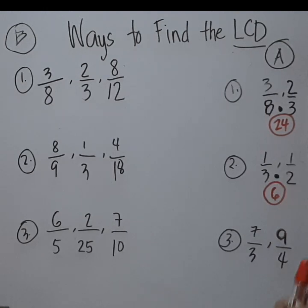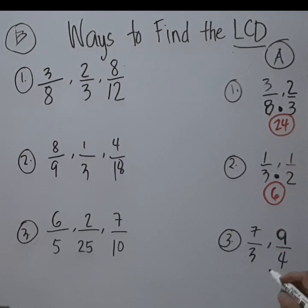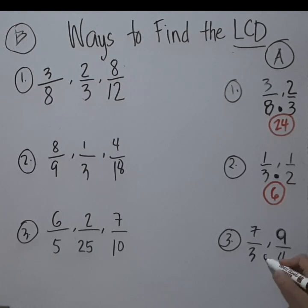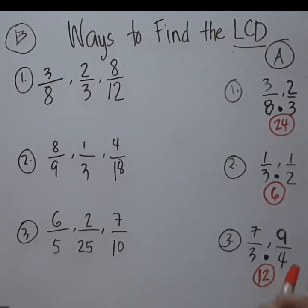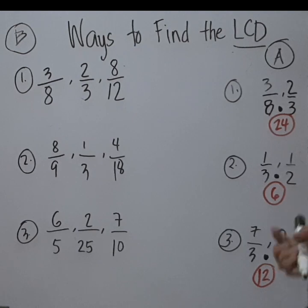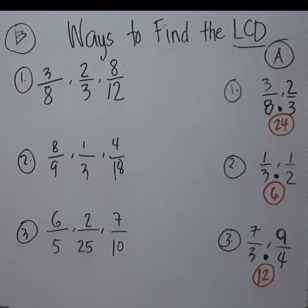Now for the last number, multiply 3 and 4 — so 3 times 4 equals 12, so 12 is the LCD for number 3. It's very easy, right? Just multiply both the denominators. Now let's jump into the second option.